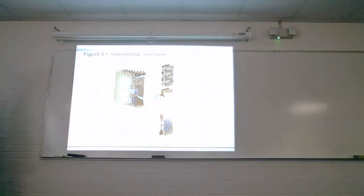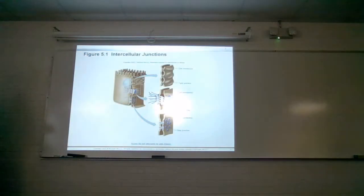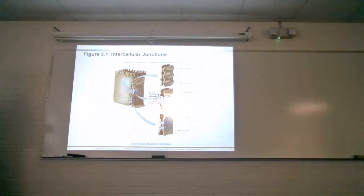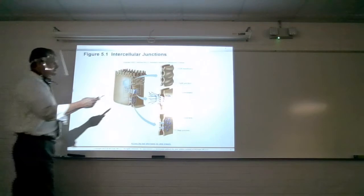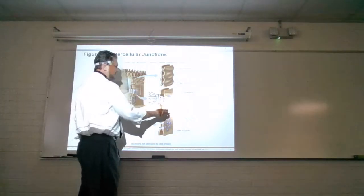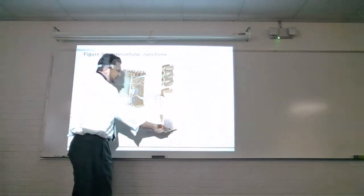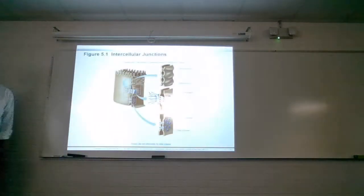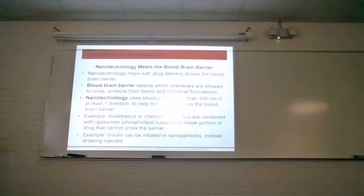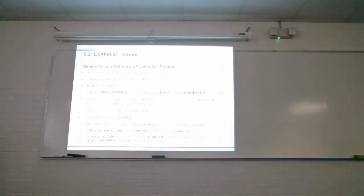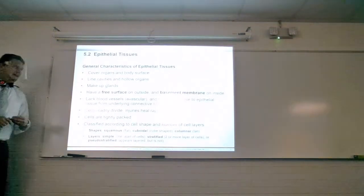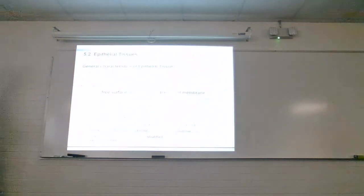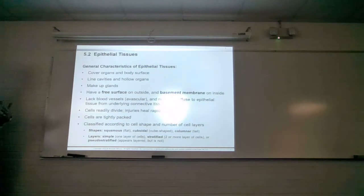Those are the three types of special connections between cells. Tight junctions are like stitching. Desmosomes are like welded areas. Gap junctions are simply holes between two cells. Now, the first type of tissue we get into is epithelial tissue. Remember that it always has a free surface, which means it lines the cavities of hollow organs. It's going to have a free surface and a basement membrane.